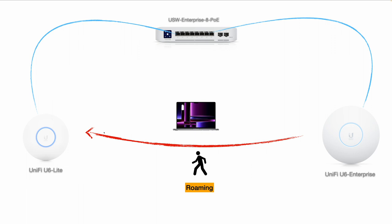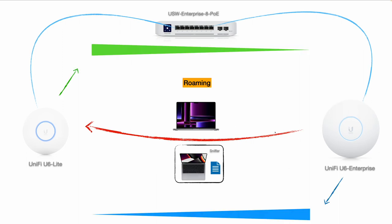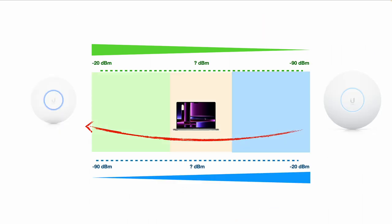This is my lab environment. I have two access points from Ubiquiti. I will hand-hold a MacBook Pro and move from a place close to the U6 Enterprise AP toward the U6 Lite AP. To capture all the Wi-Fi frames during the process, I will hold another Apple laptop running a sniffer so that I can capture all Wi-Fi frames from beginning to end.